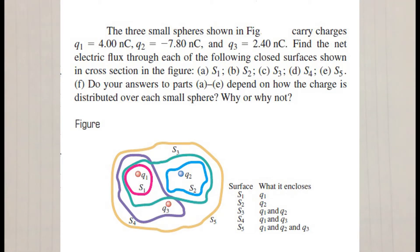The three small spheres shown in the figure carry charges Q1 equal to 4 nanocoulombs, Q2 equal to minus 7.8 nanocoulombs, and Q3 equal to 2.4 nanocoulombs. Find the net electric flux through each of the following closed surfaces shown in cross section in the figure.